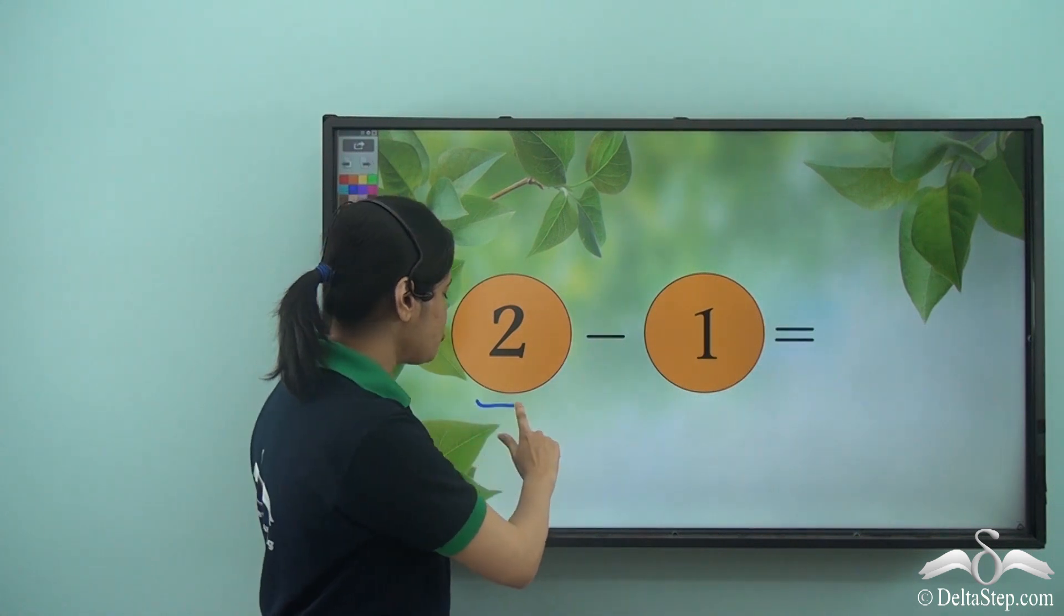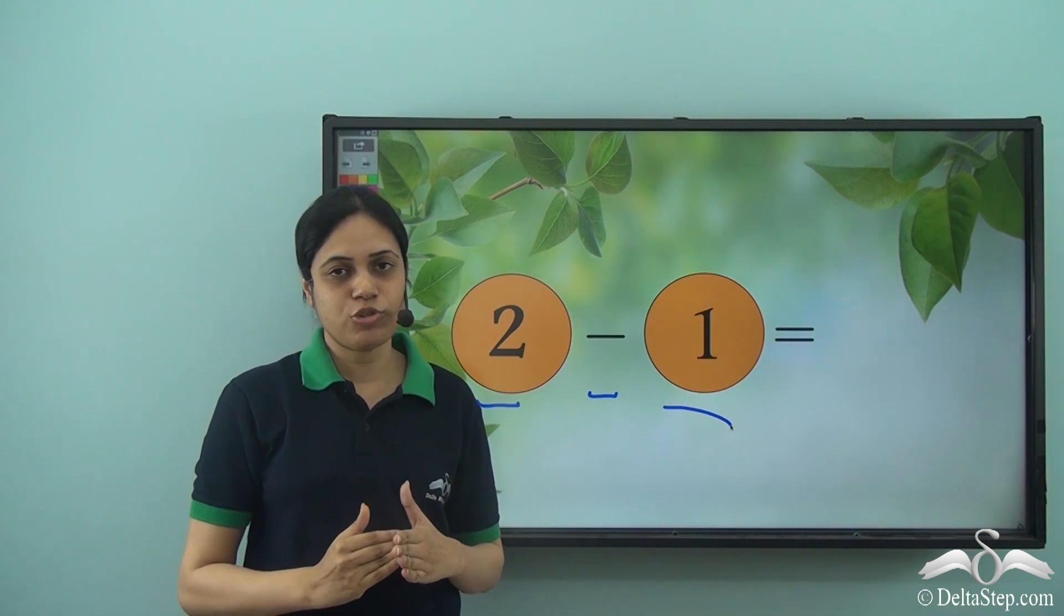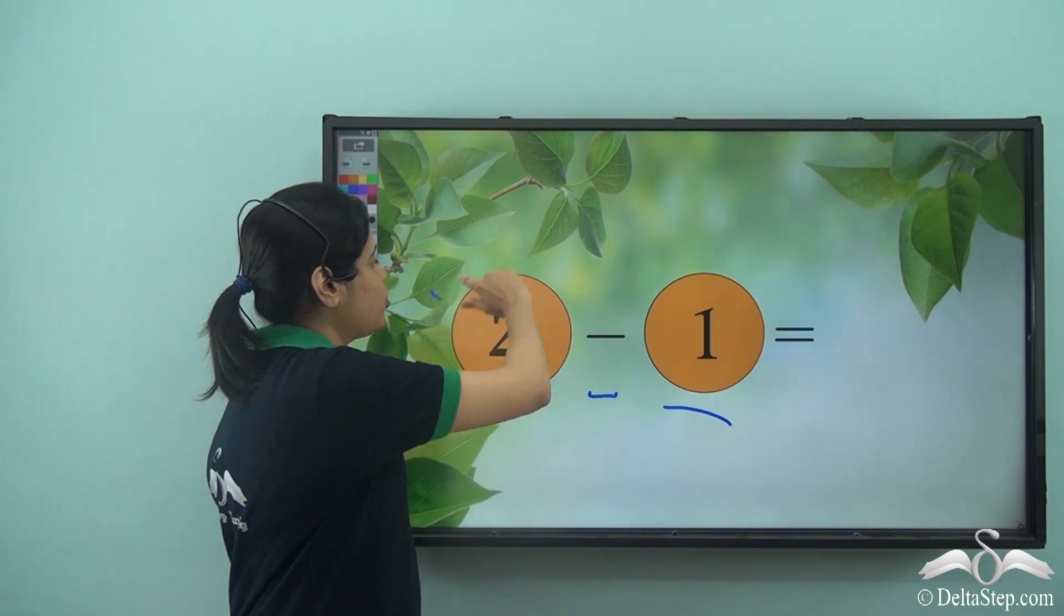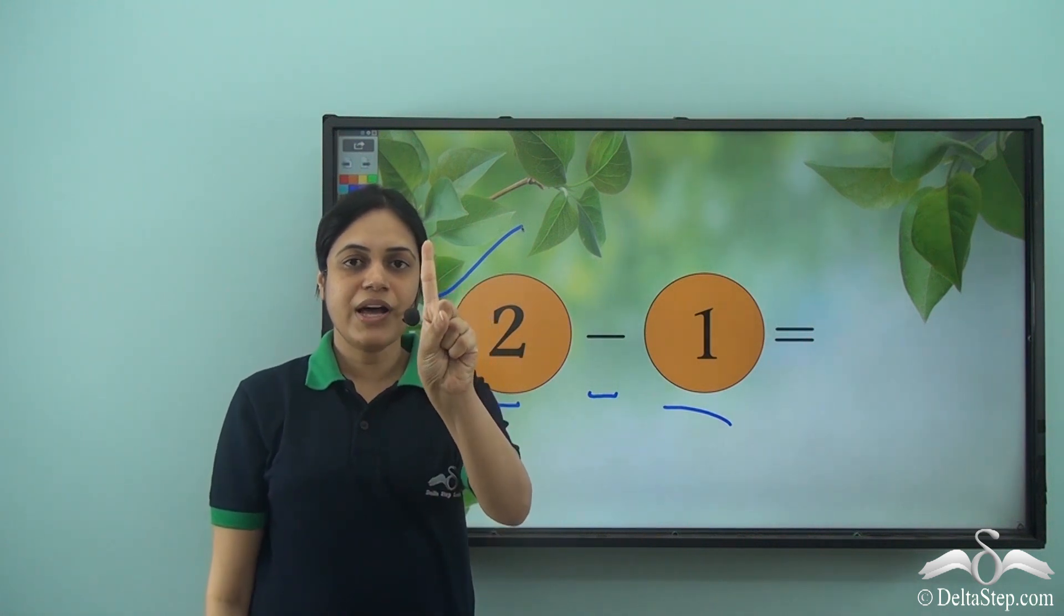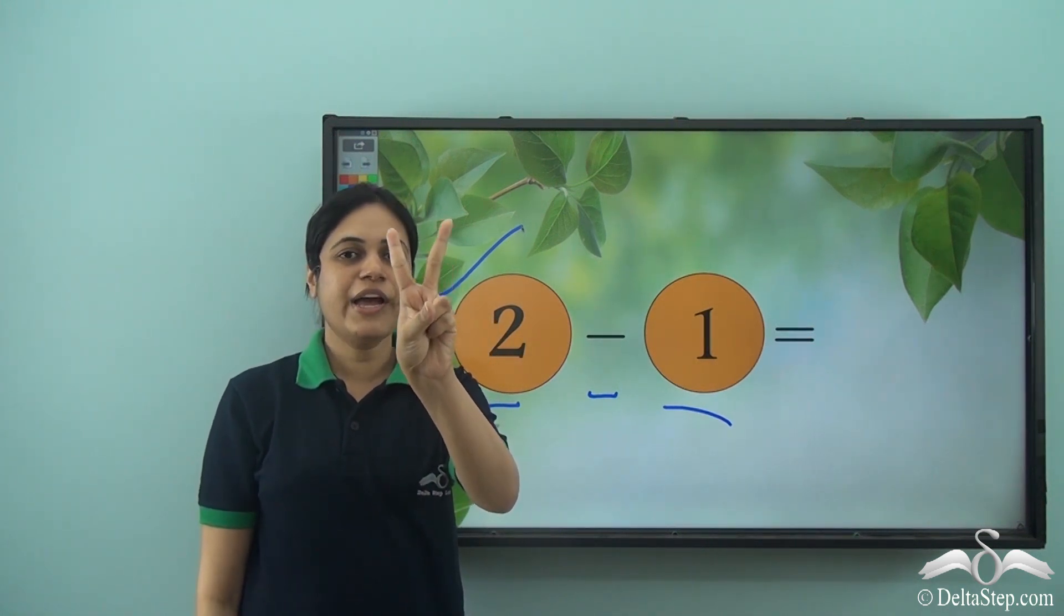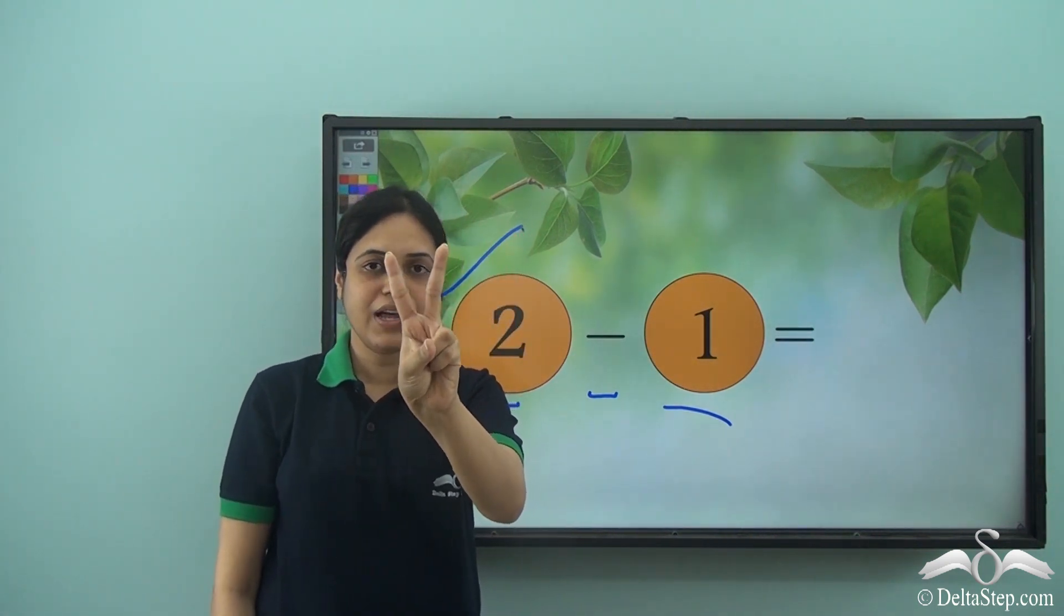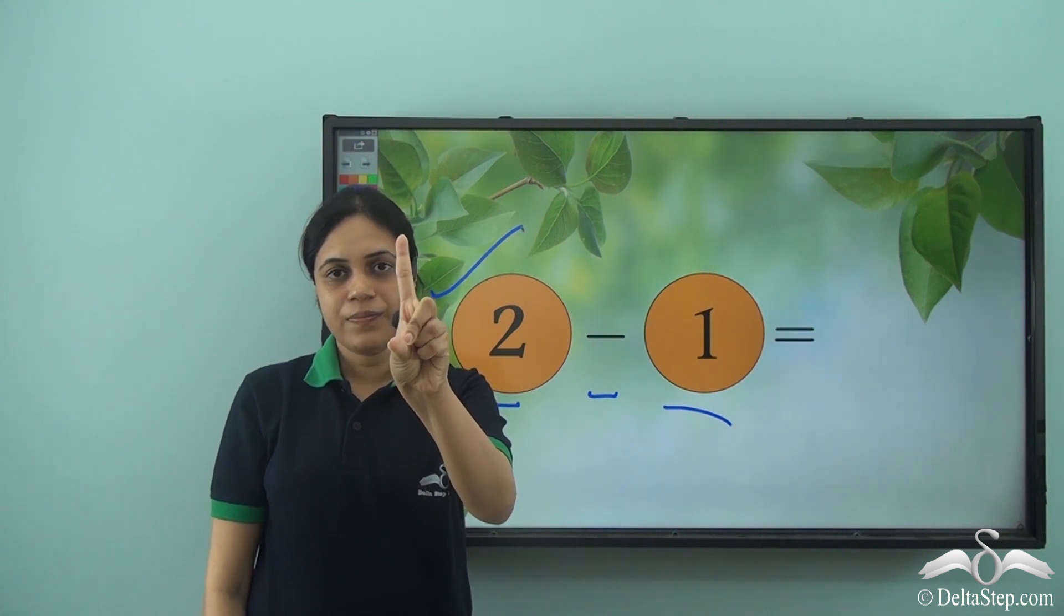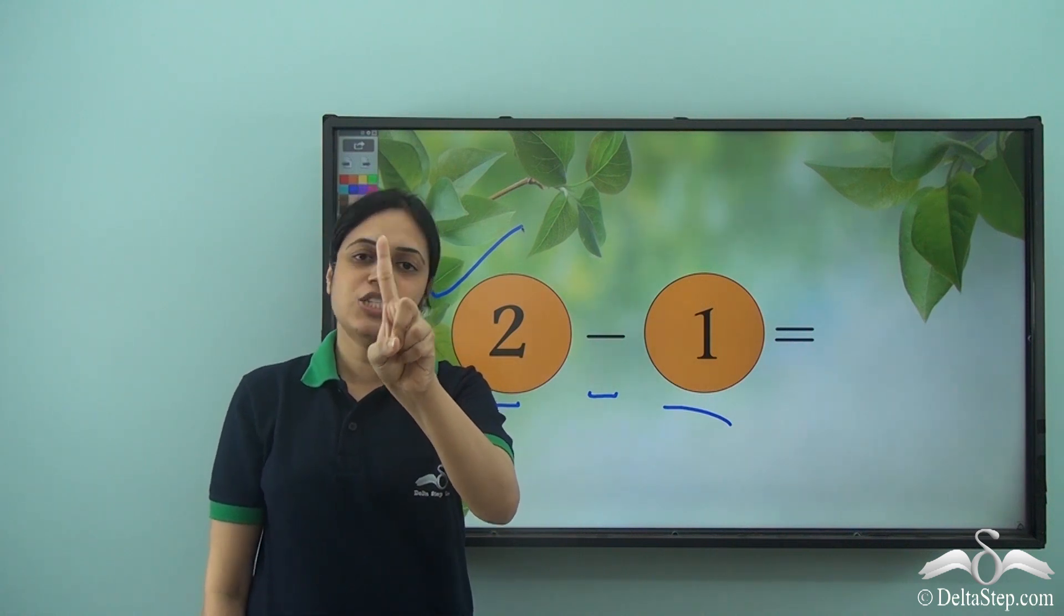So I need to perform two minus one. So one is taken away from two, or one is subtracted from two. So I start with two. So firstly I will open two fingers. One, two. I open two fingers and I need to subtract or take away one. So I take away one or remove one. So I remove this finger. Now how many fingers are here? Or how many fingers am I left with? Just one.